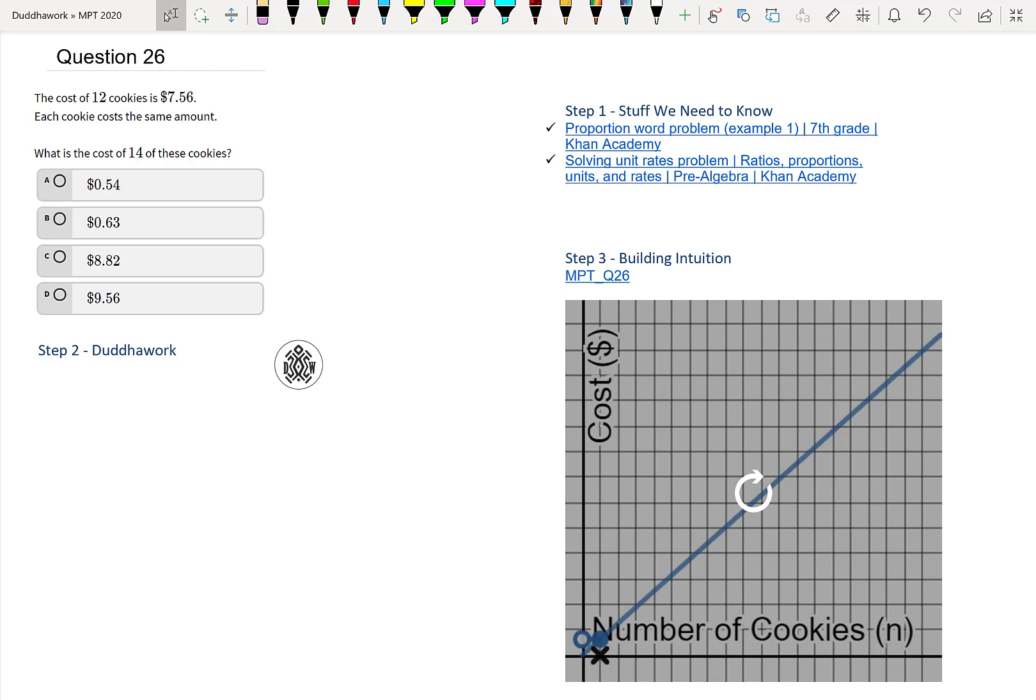So just right off the bat, the first step is always to understand the problem, the stuff we need to know. So you can watch these two videos and try this problem by yourself. But right off the bat, by just reading this, if we understand what's going on, imagine you're at a store and you can buy 12 cookies for $7.56. And if we assume that if you buy one cookie, it's one twelfth of that price, essentially.